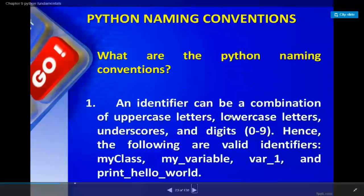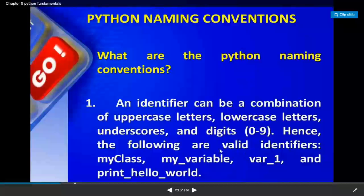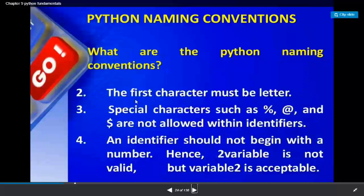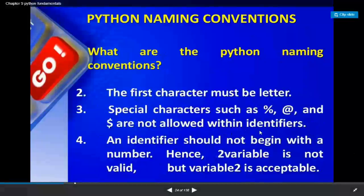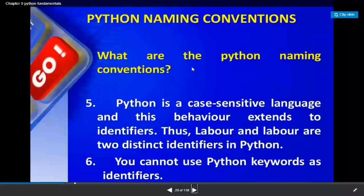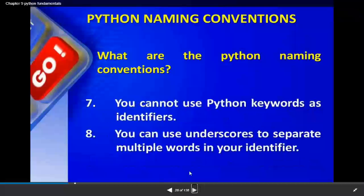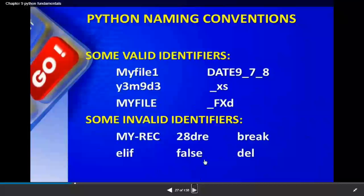An identifier is a combination of uppercase letters, lowercase letters, underscore, and digits. For example 'my_class', 'my_variable' are valid identifiers. The first character must be a letter or underscore - an identifier should not begin with a number. Python is a case sensitive language, so a word written in capital letters is different from the same word in small letters. You cannot use Python keywords as identifiers, but you can use underscore to separate multiple words.